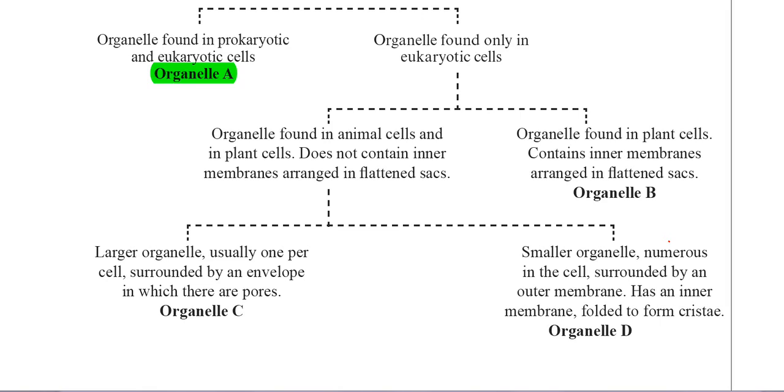Over on the left-hand side, I've highlighted in green organelle A. It's telling you here that the organelle is found in both prokaryotic and eukaryotic cells. That can only mean one organelle – an organelle without a membrane, because one definition of prokaryotic cells is that they don't have membrane-bound organelles.